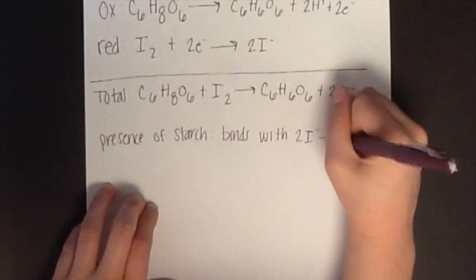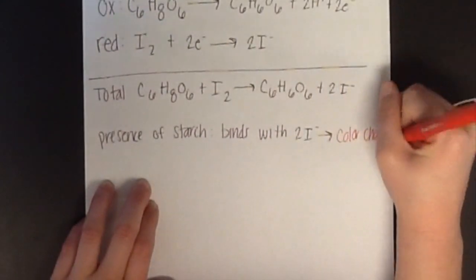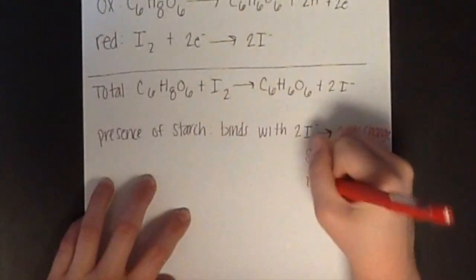In the presence of starch, the binding between the starch and iodine will cause a color change of the solution.